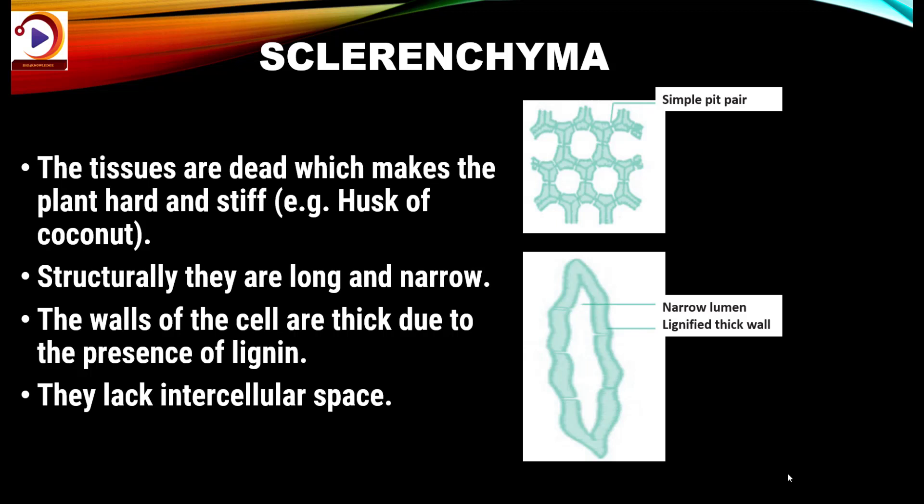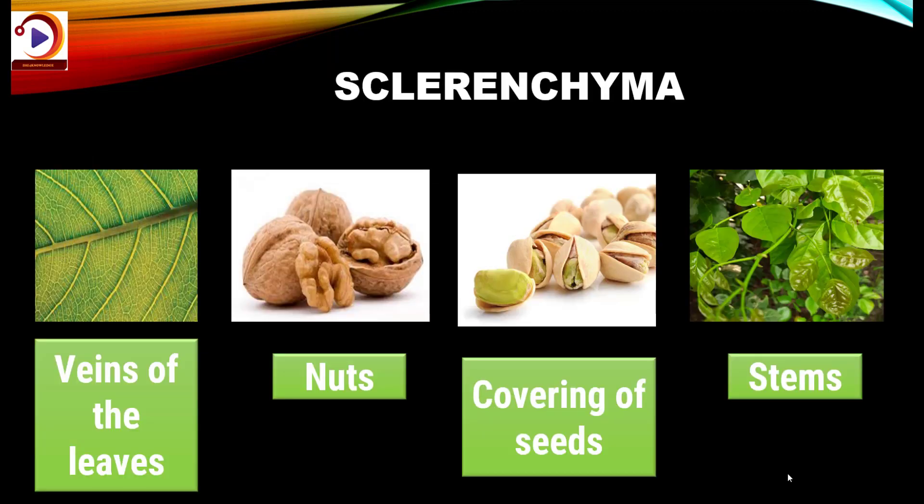Then comes sclerenchyma. The tissues are dead, which makes the plant hard and stiff — for example, the husk of a coconut. Sclerenchyma cells are structurally very long and narrow. The walls of the cells are thick due to the presence of lignin. They lack intercellular space. These tissues are present in veins of leaves, in nuts, in the covering of seeds, in stems, and around the vascular bundles.